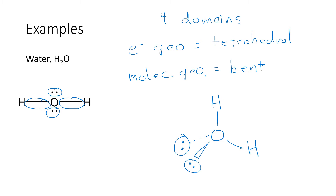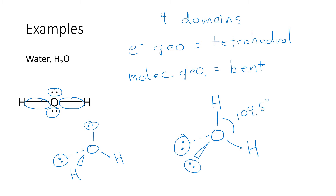It does not matter which positions we draw the lone pairs in — it would be perfectly fine to draw this structure with the hydrogens and the lone pairs in any possible combination. Any possible location is fine for the lone pairs versus the bonding pairs. The bond angle from hydrogen to oxygen to hydrogen is 109.5 degrees.